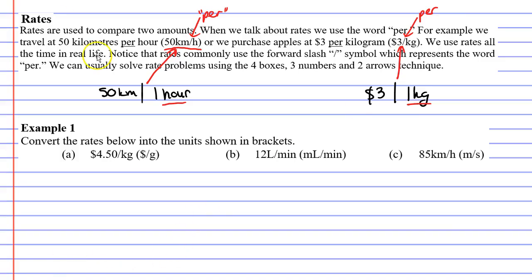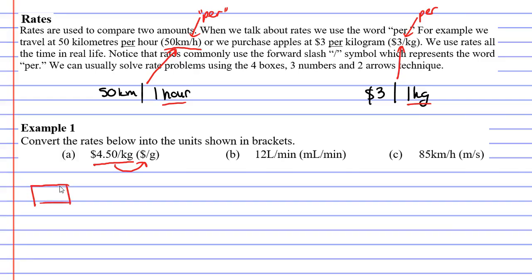Let's now move on to example one. It wants us to convert the rates below into the units shown in brackets. For question A, our rate is $4.50 per kilogram, and they want us to convert this to dollars per gram. We are going to do this using the four boxes, three numbers, and two arrows technique.